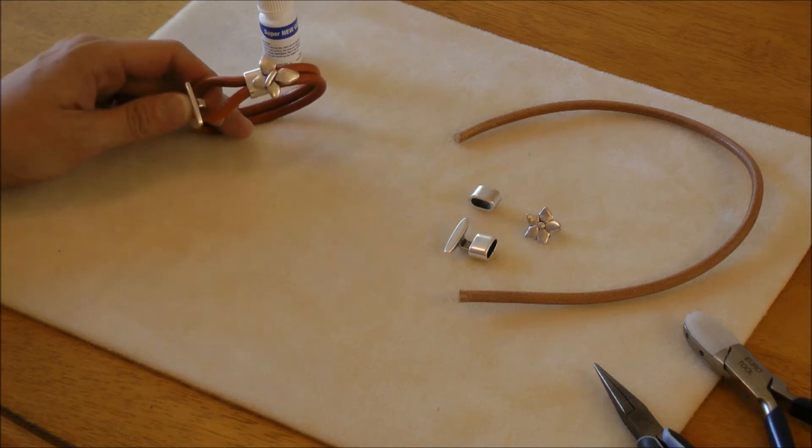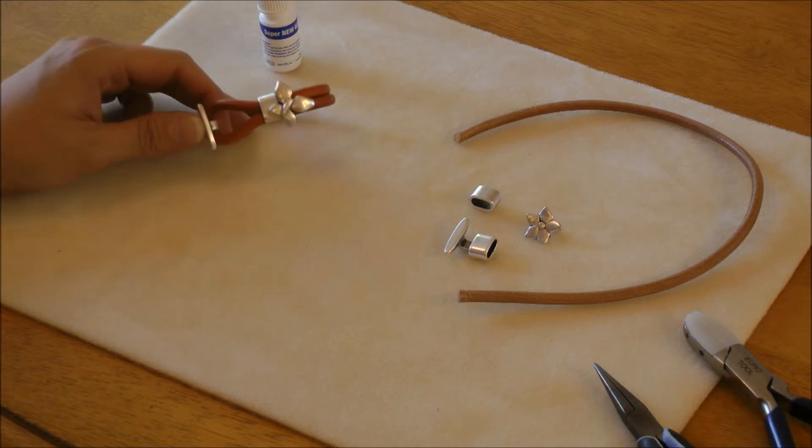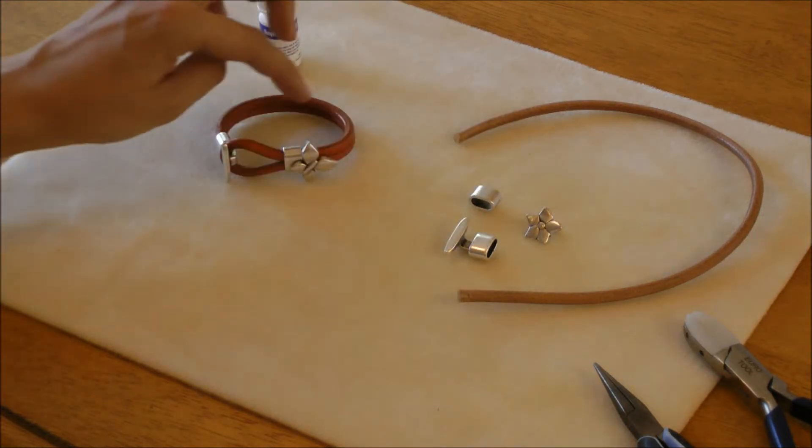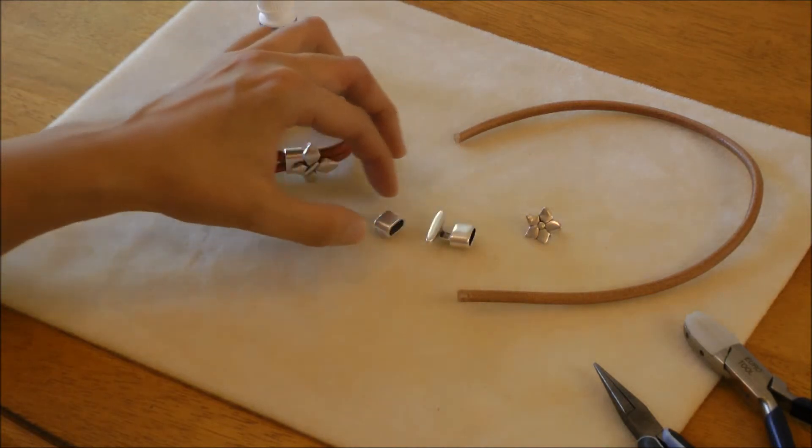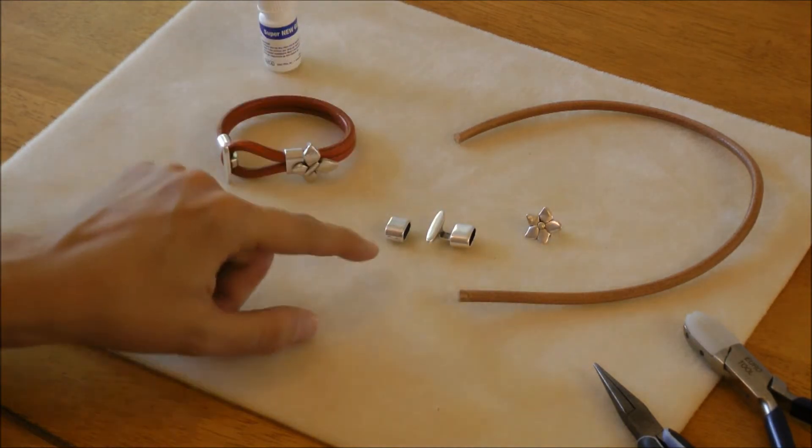Today we're going to make a similar version using a different color leather and a different slider, a flower instead of a butterfly, but the same clasp. It's called a t-bar clasp, and it comes with these two components.